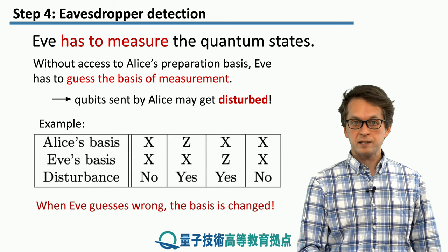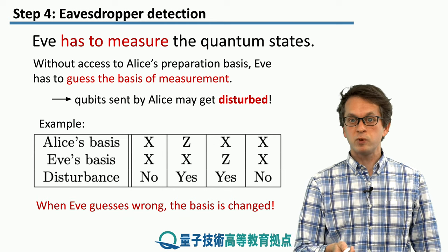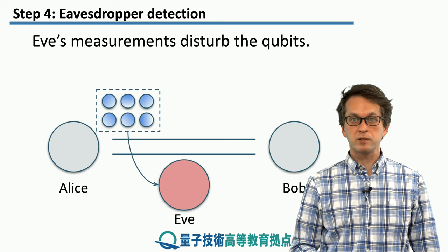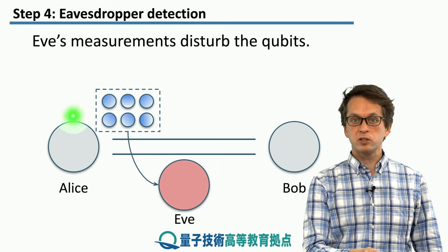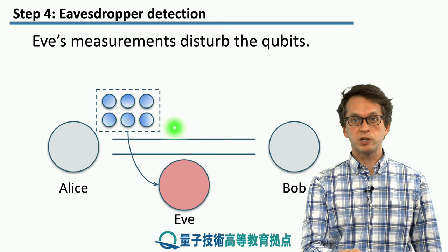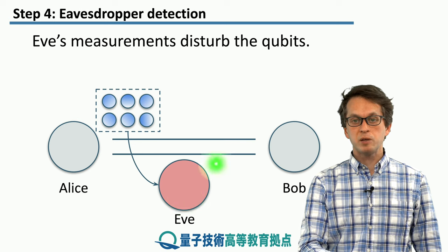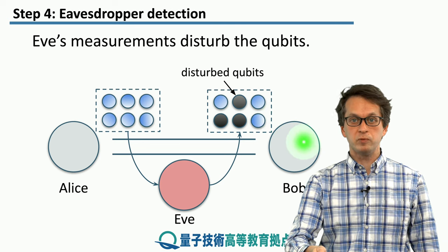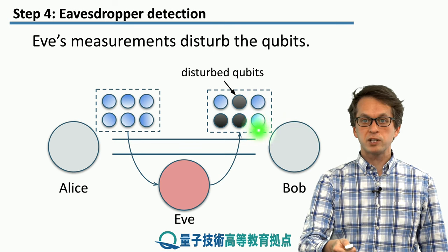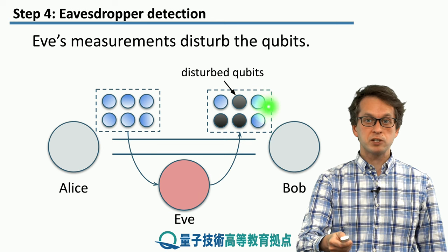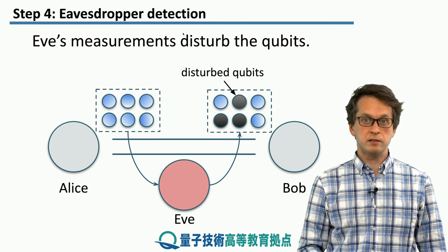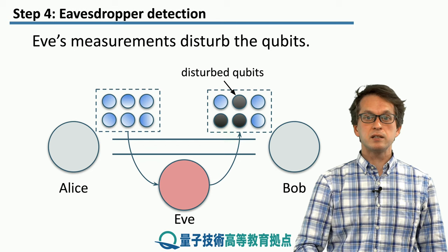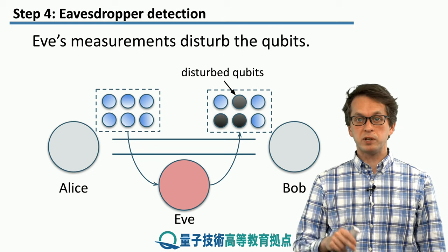If Eve guesses wrong, she will change the basis of the qubit. So let's see what happens. Alice prepares her qubits and starts sending them over the public quantum channel. Eve intercepts these qubits, measures them in a random basis, and then passes them on to Bob. Some of these qubits — where she guesses correctly and measures in the preparation basis — do not get disturbed. But some of these qubits, represented by the black qubits, become disturbed when Eve measures in a different basis than the preparation basis.